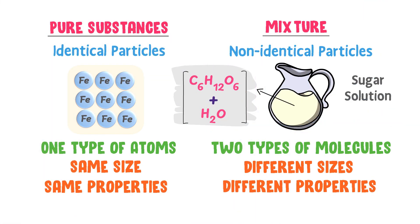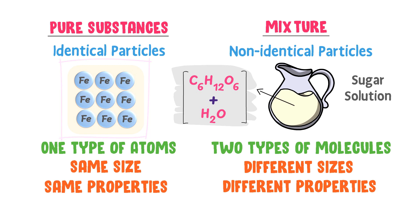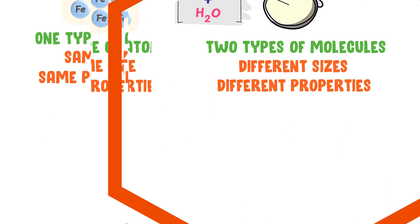Thus, this sugar solution is not a pure substance — it is a mixture. We also learn that all solutions are mixtures. So remember: a pure substance is made up of the same particles, like an iron sheet, while a mixture is made up of different particles, like a sugar solution.